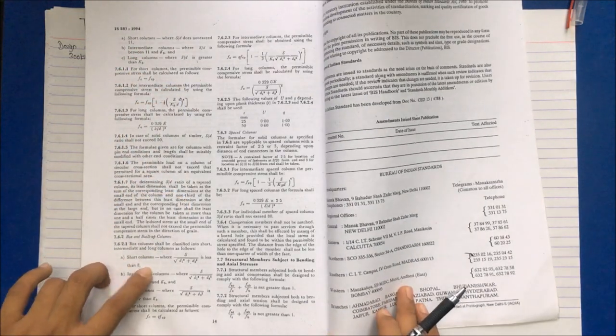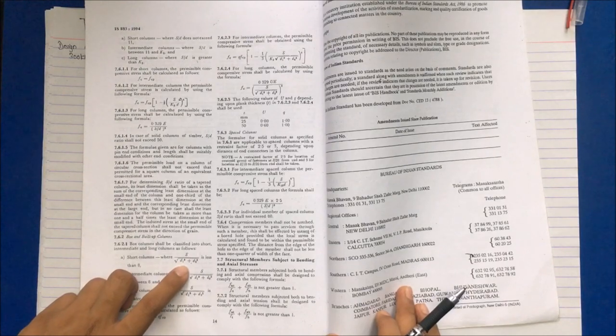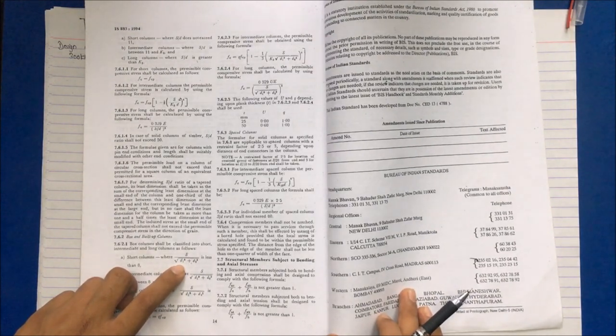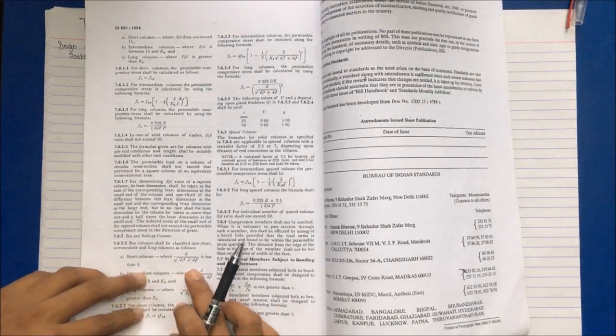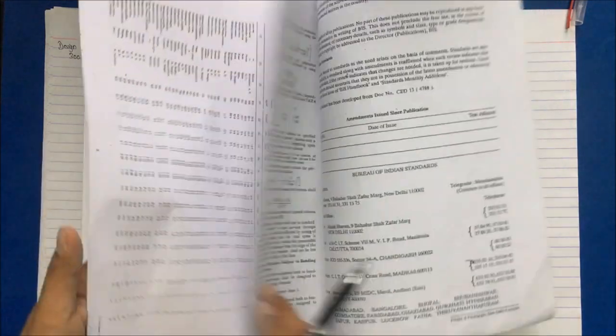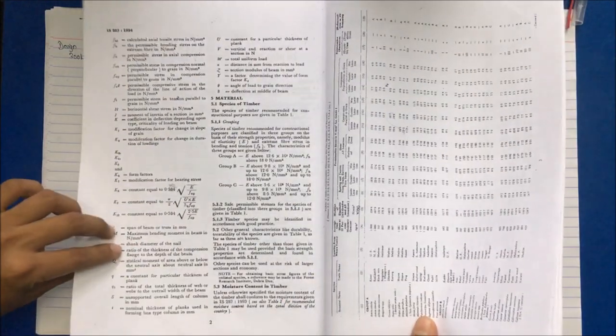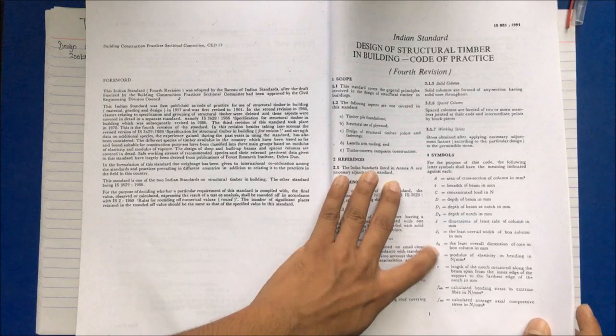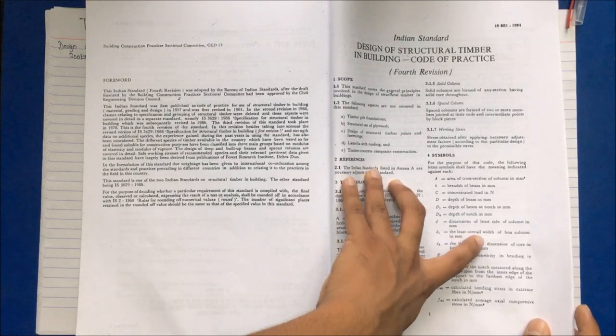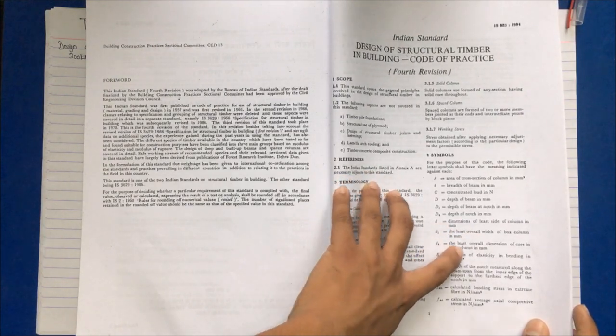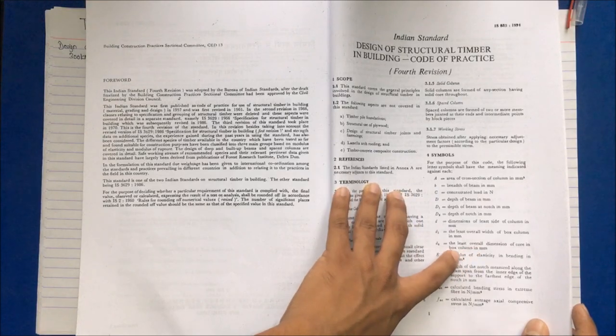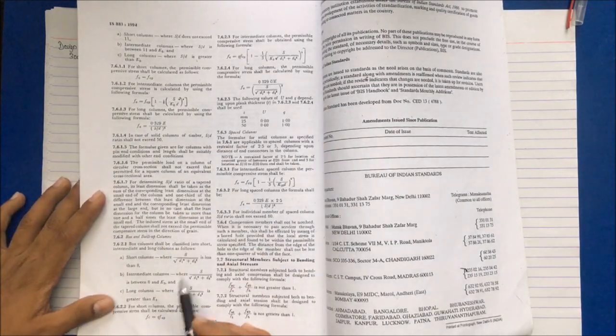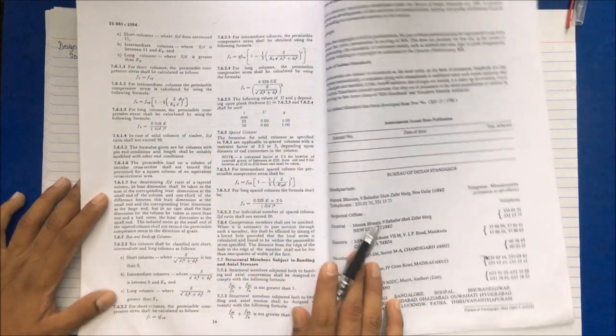In case of box or built-up column, you will see new terms d1 and d2 introduced. At page number one of IS 883, d1 is the least overall width of the box in mm, and d2 is the least overall dimension of core in box in mm. These are the conditions to determine whether the beam is short, intermediate, or long.